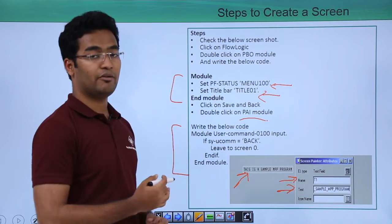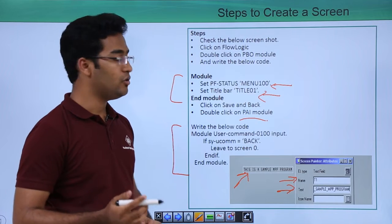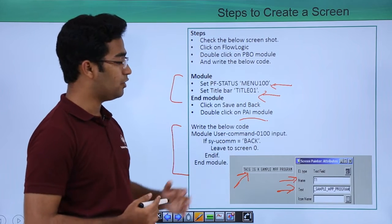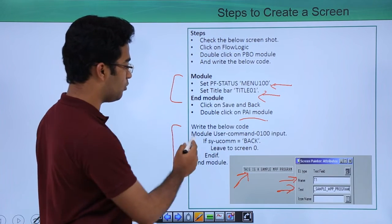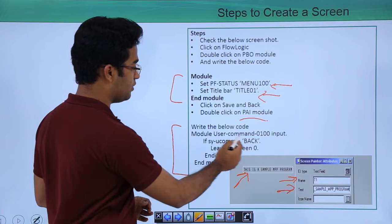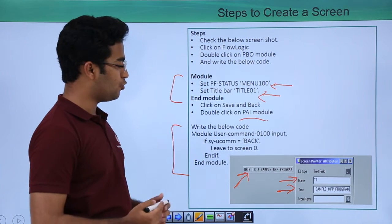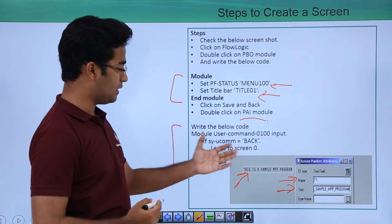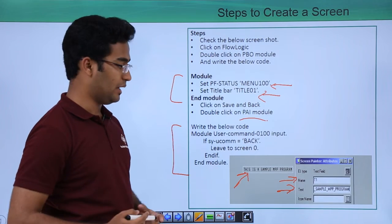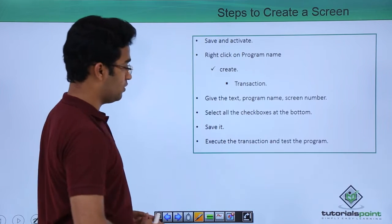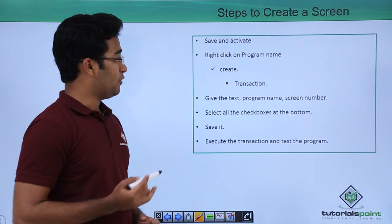Previously we did our coding on the PBO module; now we will do it on the PAI module. The code is: MODULE user_command_0100 INPUT. If sy-ucomm is BACK, then LEAVE TO SCREEN 0. END MODULE. Just save it and activate it.